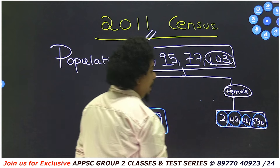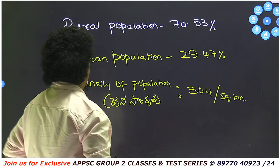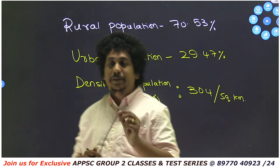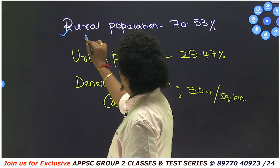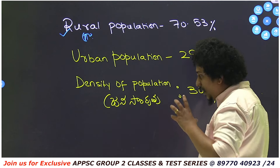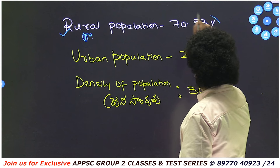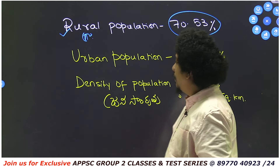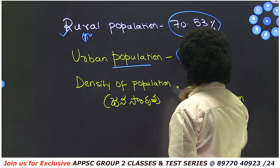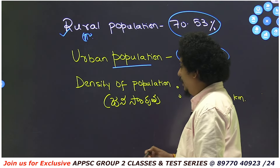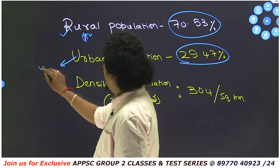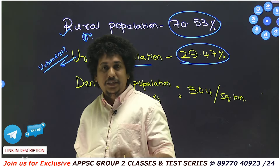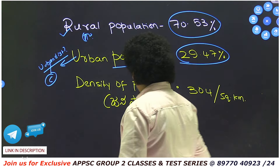Regarding the female population in Andhra Pradesh: 70.53% of the population is rural, and 29.47% is urban population. There is a notable urban district distribution in Andhra Pradesh that we will examine.